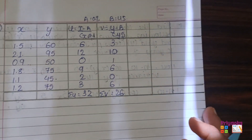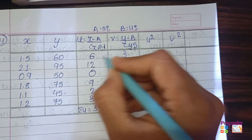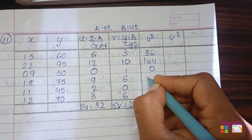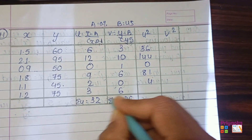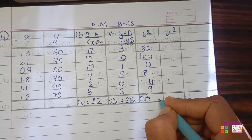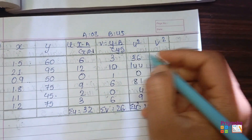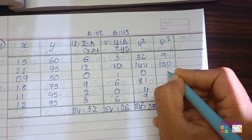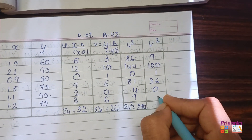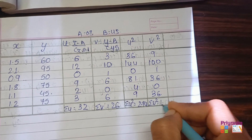Next columns will be u² and v². For u²: 6² = 36, 12² = 144, 0² = 0, 9² = 81, 2² = 4, and 3² = 9. Here we get σu² = 274. For v²: 3² = 9, 10² = 100, 1² = 1, 6² = 36. And here we get σv² = 182.